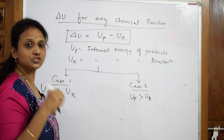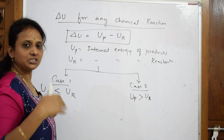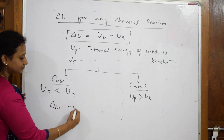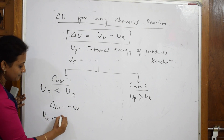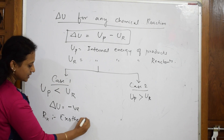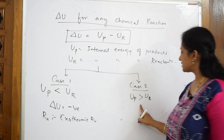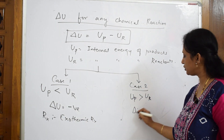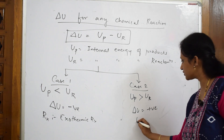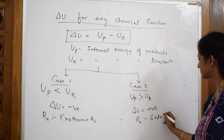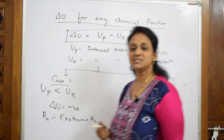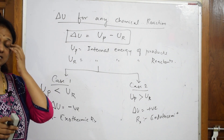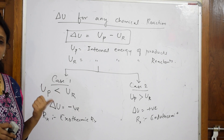Internal energy includes translational, rotational, vibrational, zero-point, and all other energy contributions. Case 1: if the internal energy of products is less than that of reactants, delta U is negative — the reaction is exothermic. Case 2: if the internal energy of products is greater than that of reactants, delta U is positive — the reaction is endothermic. Internal energy (delta U) can be measured using a bomb calorimeter.